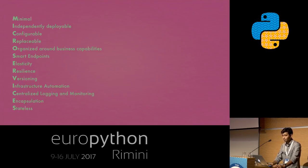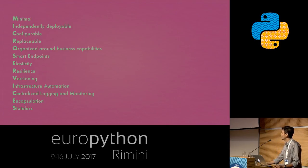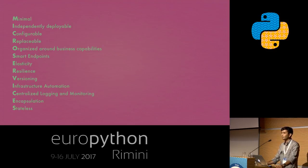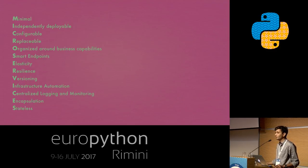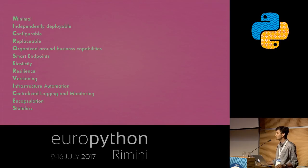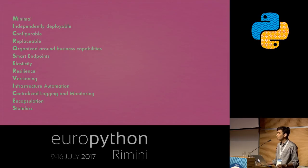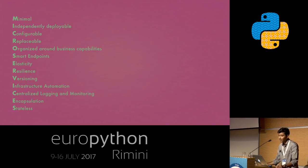With that definition of microservices, I have listed down the characteristics of what microservices should have. First, it has to be minimal — each microservice should adopt a single function responsibility pattern. For example, if you are writing an e-commerce website and there is a payment service, that service should only be dealing with the payment part. Other services don't need to know the underlying implementation of how payment is processed. The second part is independently deployable — each individual service has to be independently deployable on cloud instances.